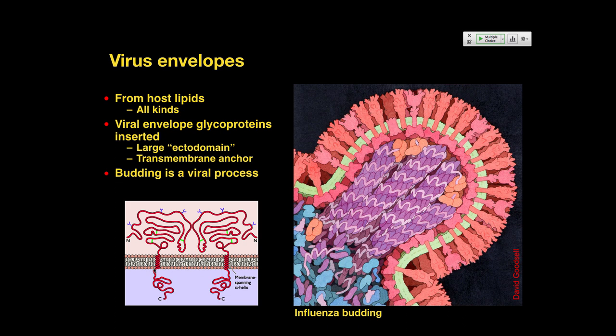Envelope glycoproteins usually have just a single transmembrane helix with a large ectodomain on the outside and a relatively small endodomain on the inside. These are almost always going to be the first thing that interacts with the host. The budding process — the textbook frames it as purely a viral process, but there are vesicles released from cells all the time. The unusual thing is having all these viral proteins associated with them as well.